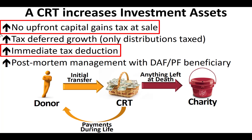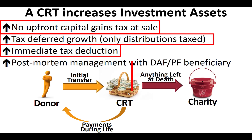On top of that, because it's an irrevocable trust that at the end of life makes a transfer to some charity, the donor gets an immediate tax deduction. And on top of that, you get tax-deferred growth inside the charitable remainder trust. If the assets are invested in the market and there's a big spike, how much has to be paid in taxes on that income while it's in the charitable remainder trust? The answer is none — all of that growth is tax deferred. Taxes aren't paid until you actually take money out, similar to a traditional IRA or 401k.